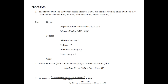Welcome to the class of Electronic Measurement and Instrumentation. In today's lecture, we'll be covering the problems of the first unit. The expected value of the voltage across the resistor is 90 volts and the measurement value is 89 volts. Calculate the absolute error, percentage error, relative accuracy, and percentage accuracy.